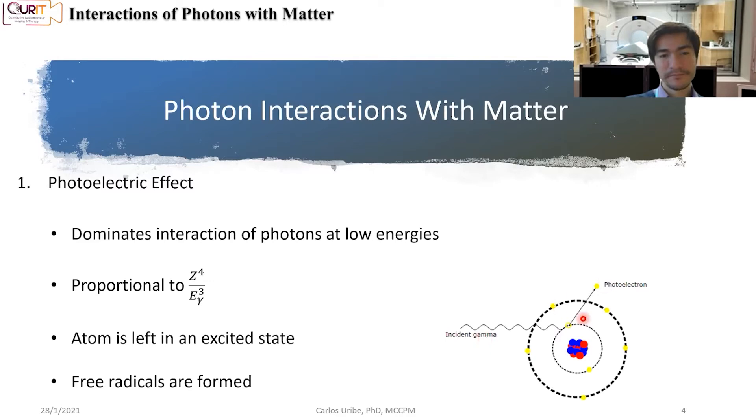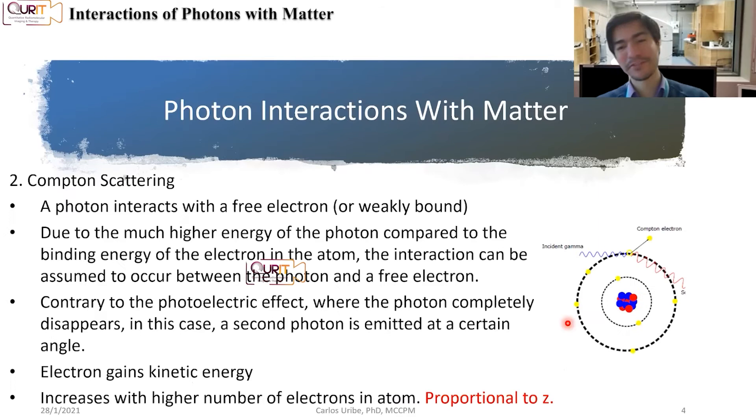Now, that atom is left in an excited state. So there's free radicals that come form. There's some chemical reactions that can happen. But again, as we've talked many times throughout our lectures, an outer shell electron can fill that empty spot and we can have emission. And we'll have emission of X-rays or we can have emission of Auger electrons.